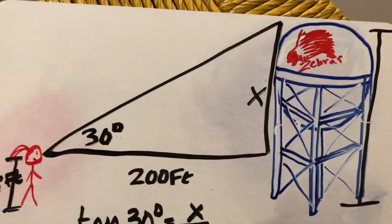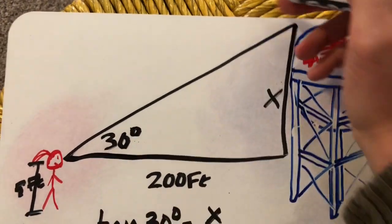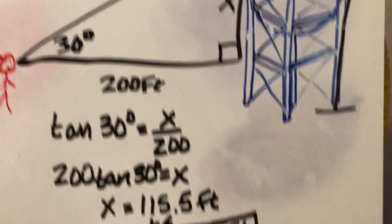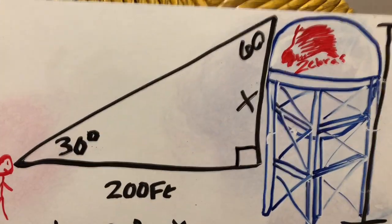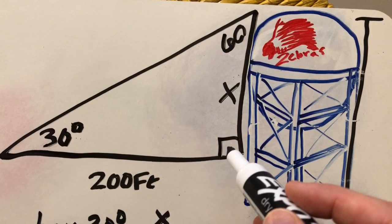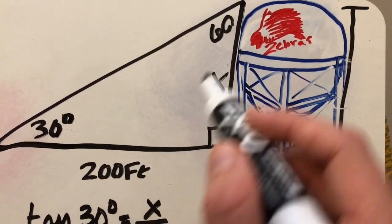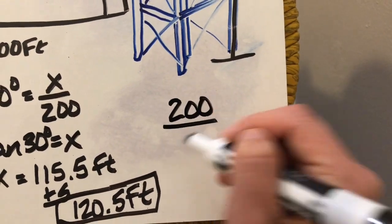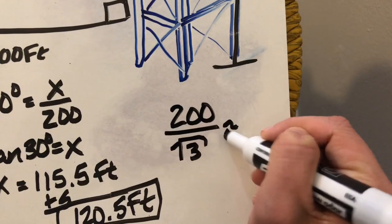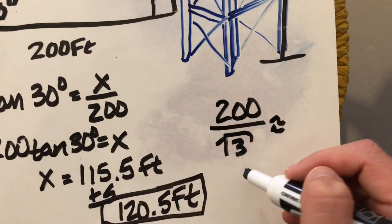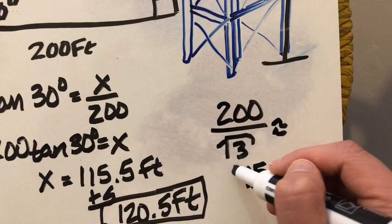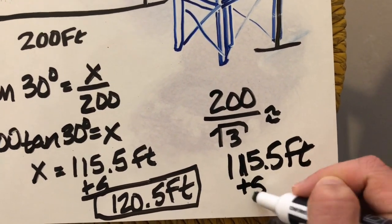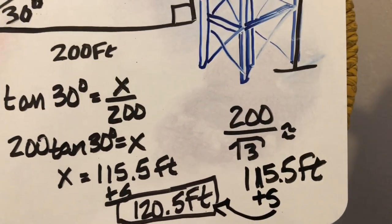Some of you may have noticed that this triangle ended up being a 30-60-90. I did not plan that, but it did work out that way. So we actually didn't need trigonometry here — we can use the properties of a 30-60-90 triangle. Since I have the long leg, to find the short leg I divide by radical three, which gives the same result: 115.5 feet. Adding five feet gives the same final answer of 120.5 feet.